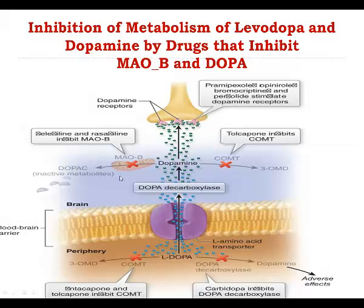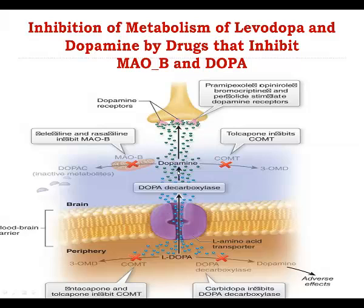The drug that inhibits activity of MAO-B enzyme is selegiline, and the drug that inhibits activity of the COMT enzyme is tolcapone. Tolcapone inhibits COMT not just in the patient's brain, preventing metabolism of dopamine into inactive products, but also inhibits COMT in the periphery, increasing the amount of levodopa that can reach the brain and be converted into dopamine.